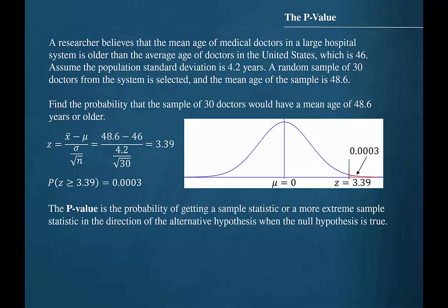The p-value is the probability of getting a sample statistic or a more extreme sample statistic in the direction of the alternative hypothesis when the null hypothesis is true. The belief is that the mean age of medical doctors in a large hospital system is older than the average age of doctors in the United States, which is 46.